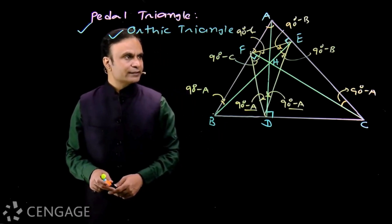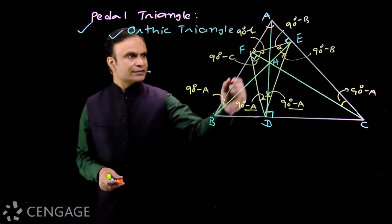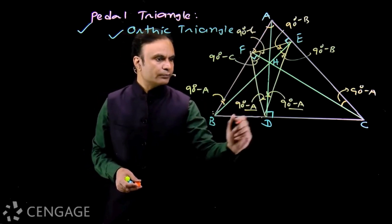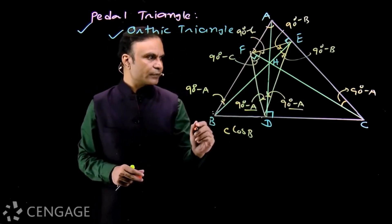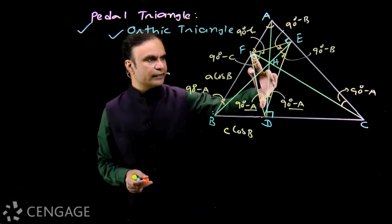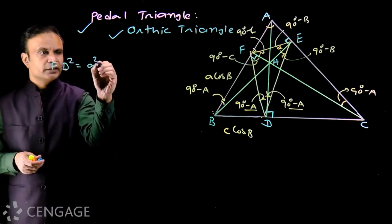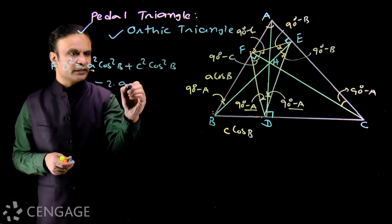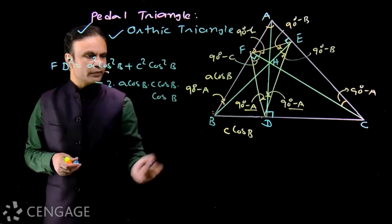Now let's find the sides of the pedal triangle. To get side FD, consider triangle FBD. Here BD is the projection of AB on BC, which equals C cos B, and BF is the projection of BC on AB, which equals A cos B. We have two sides and the included angle B, so we apply the cosine rule: FD² = A² cos²B + C² cos²B − 2(A cos B)(C cos B)(cos B).